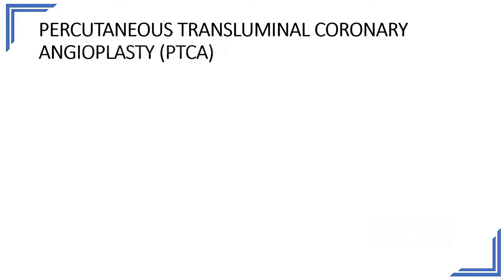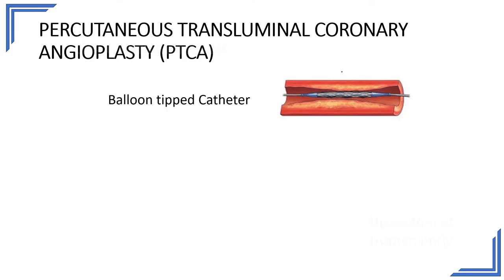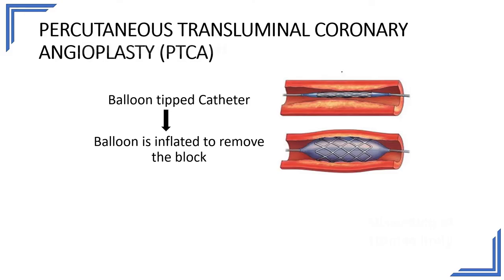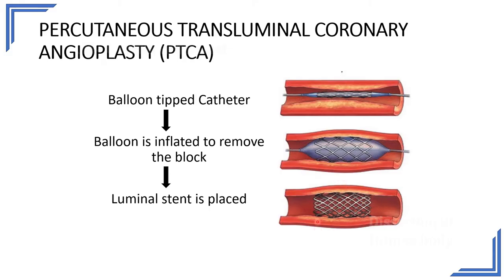Next is percutaneous transluminal coronary angioplasty, or simply angioplasty. Here, as seen during angiography, a catheter is introduced into the artery of choice. If the cardiologist identifies an obstruction — a block affecting the distal vascularity — a balloon-tipped catheter is introduced into the block. After reaching the site of block, the balloon is inflated, the block gets dilated, and the blood vessel regains its original diameter. When the balloon is then deflated, a stent is placed in position to prevent collapse of the artery after the procedure.